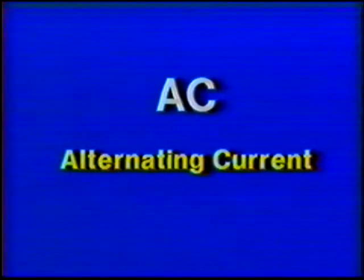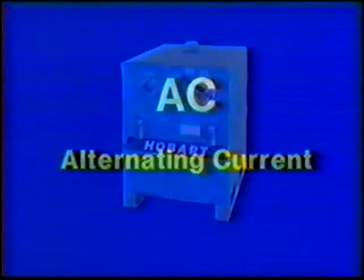Alternating current, called AC, can be used with the shielded metal arc process. Many domestic power sources are capable of providing only alternating current. Most types of power sources can be used for shielded metal arc welding.